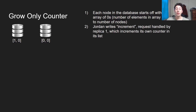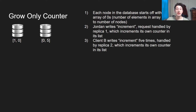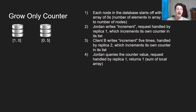Every time one of the replicas handles an increment operation, it increments its own local counter — its corresponding index in the list it's holding. So replica one handles an increment and increments the zeroth index of its list. Client B does the same thing but handled by replica two, and that increment happens five times, so you can see five in that counter. Even though these two separate requests have been handled, the two replicas have not synced up yet. If I query the counter value and the request is handled by replica one, it returns one; handled by replica two, it returns five.